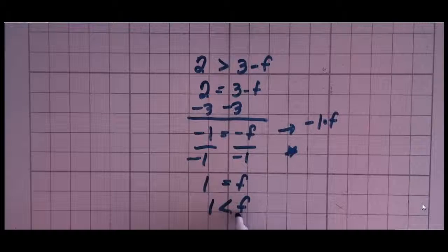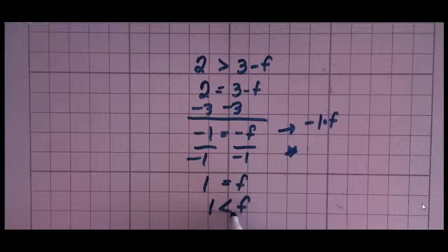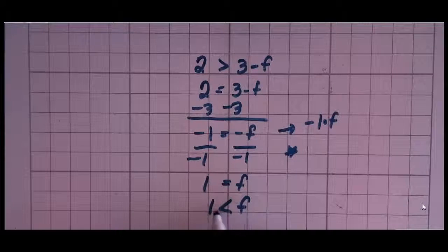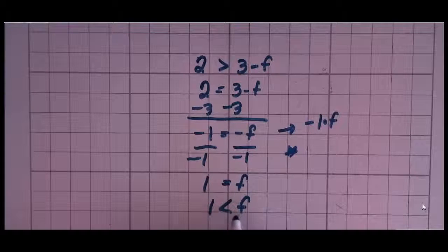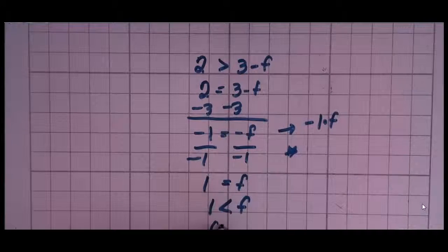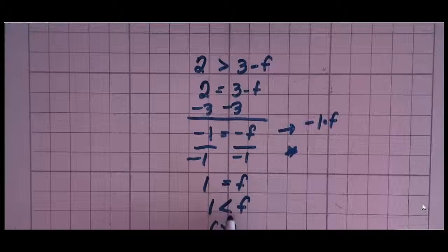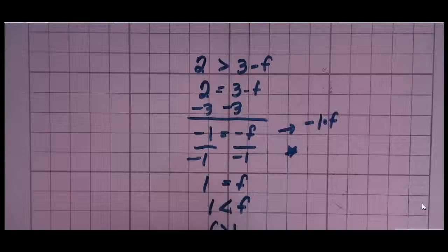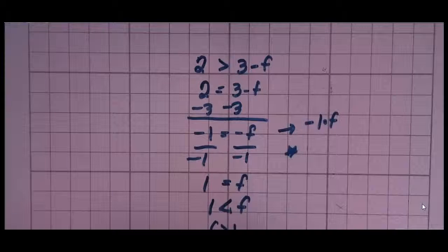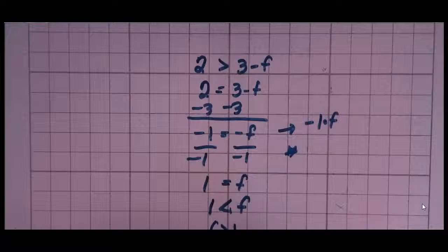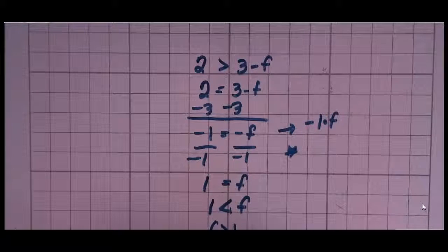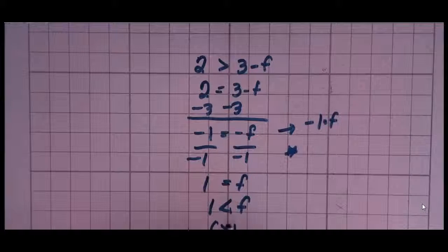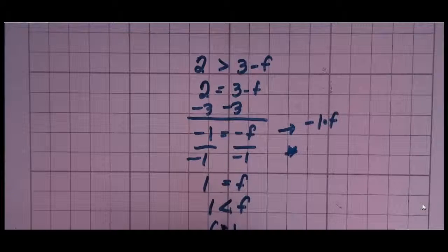The opening is next to the f. The big part is next to the f. F is greater than 1. 1 is less than f. So I can write it like this as well. You see how the opening, the big part is next to the f and the big part is next to the f? You want to make sure that if you have to change the side that your variable is on, that you keep that opening exactly the same.